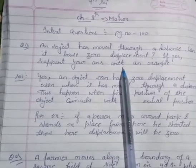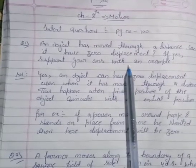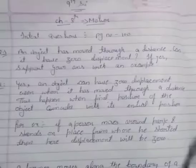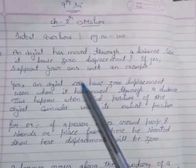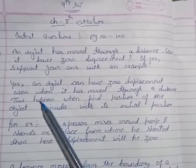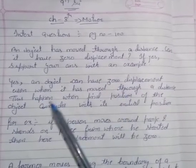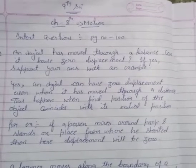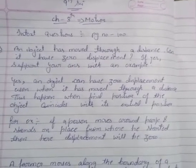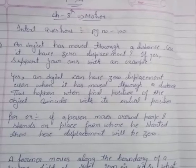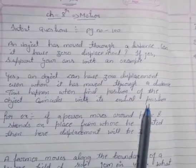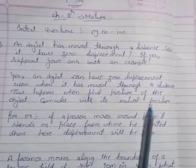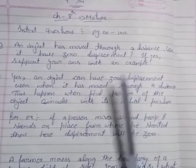The answer is: yes, an object can have zero displacement even when it has moved through a distance. This happens when the final position of the object coincides with its initial position.